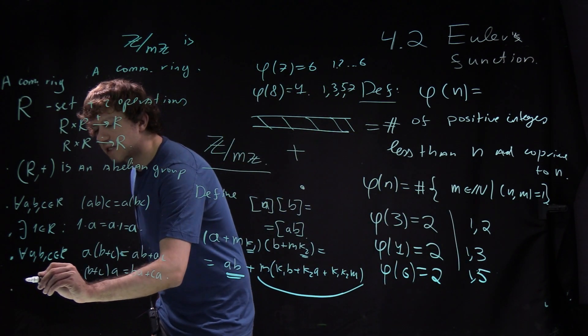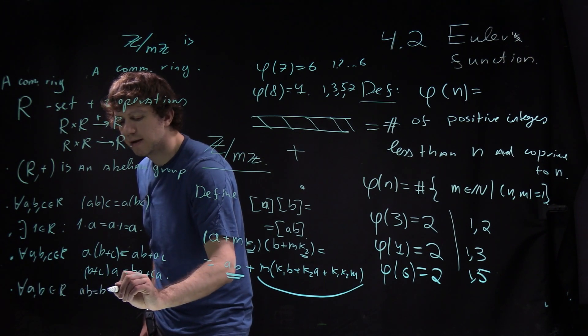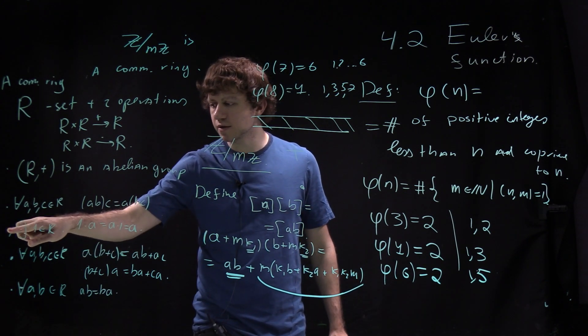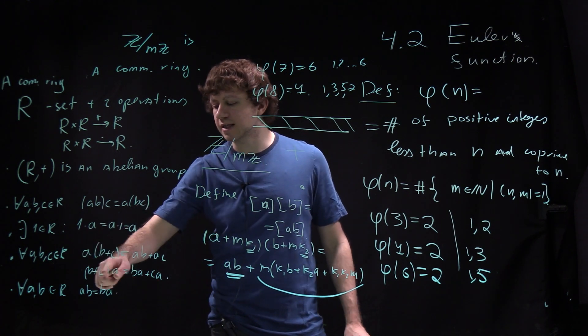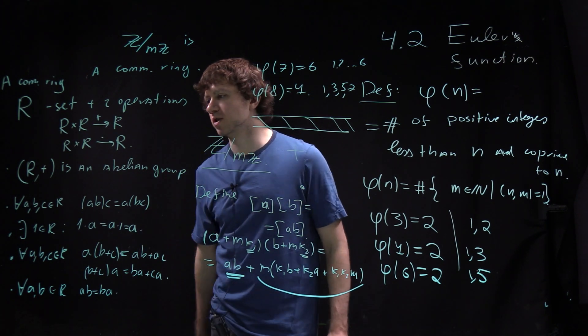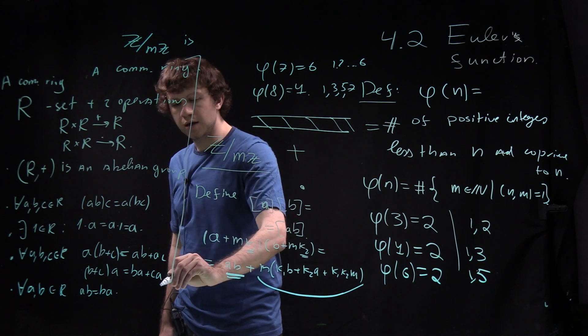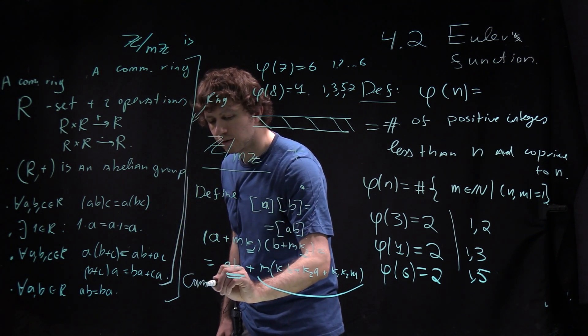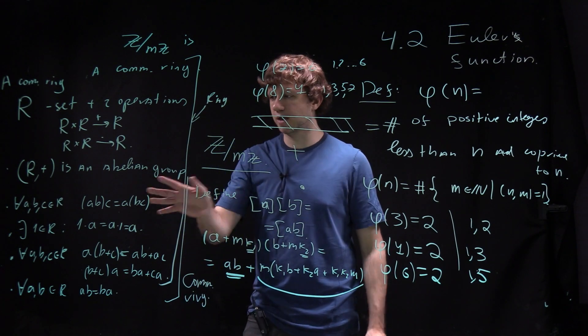Finally there's the commutativity axiom which makes your ring commutative. For every AB in R, A times B equals B times A. Commutativity is something you can omit and get incredibly interesting structures. There are amazing rings which are not commutative, and we'll discuss one in great detail this quarter called quaternions. If you can divide by any element then it's called a field.